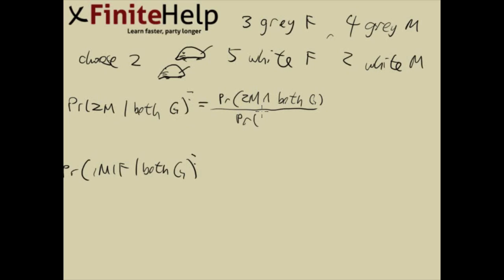So we probably have two male intersect both gray over the probability that's both gray. Here we have to identify the kind of probability problem here, which is, this is choosing two where order doesn't matter, and this is without replacement, so this is a combination problem.